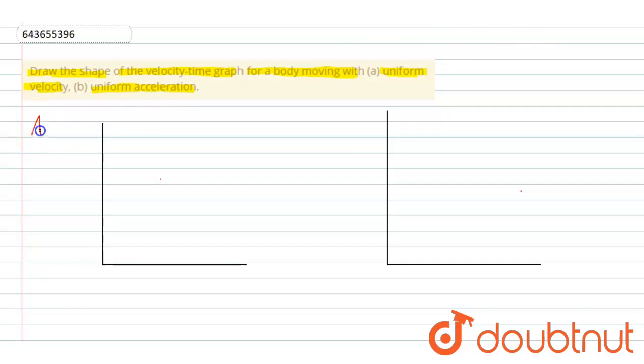So the answer will be: this is part A, this is part B. This axis is velocity, and this is time, because we're making a velocity-time graph.